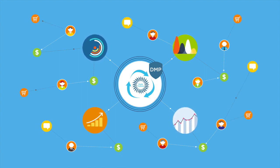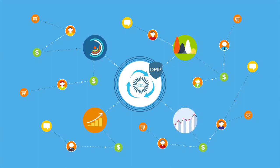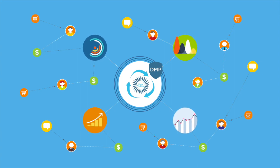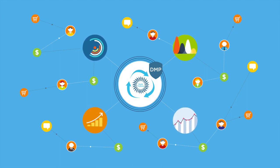The DMP consistently and accurately informs campaigns and analyzes performance. Using a DMP, advertisers can identify who to bid on, how much to bid, and what those users do after an ad is served.